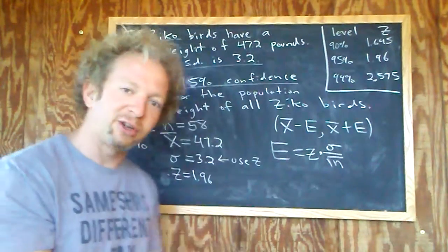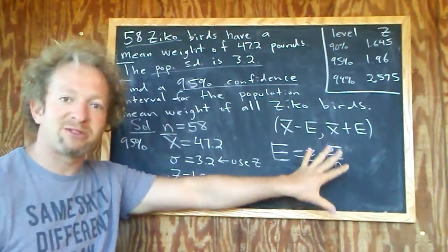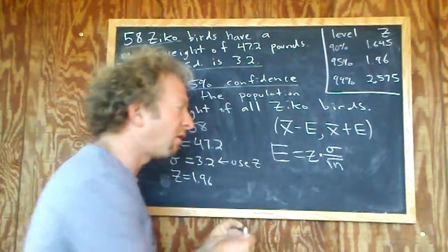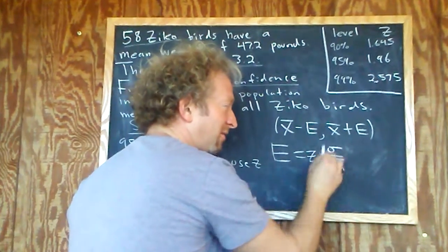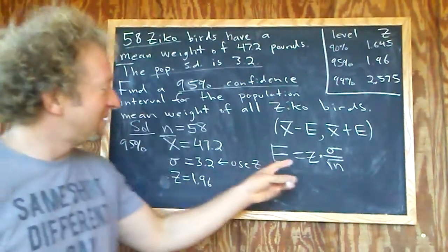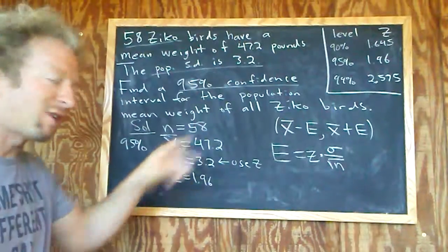What is that in this case? In this case it's sigma over the square root of n. The point is, if you open your statistics book and look in the back, there's like a million formulas for e and they all look scary, but they're all the same. They're all critical value times some formula, where that formula is the standard deviation of your statistic. That's the formula for e in this problem.